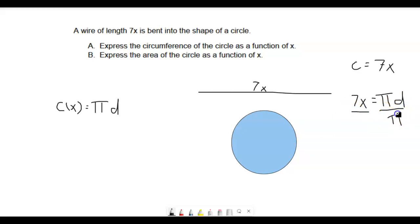so I'll divide this side by pi, divide this side by pi, these will cancel out here, and we're just left that the diameter is equal to 7x over pi. All right. Now why did we solve for diameter in terms of x? Because that's what it asks us to do and we need to get rid of this diameter over here.